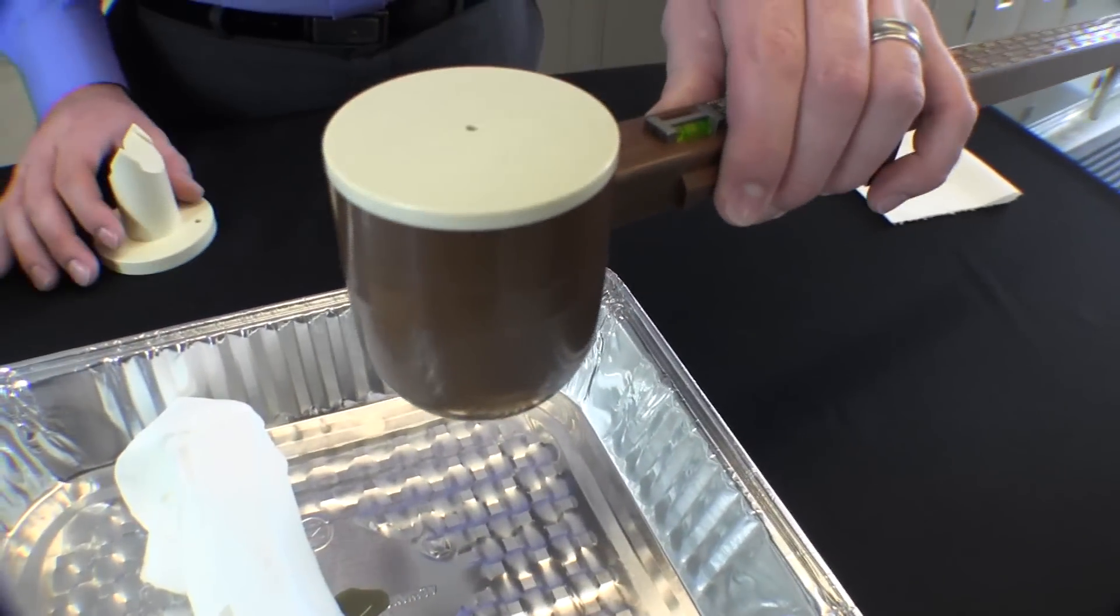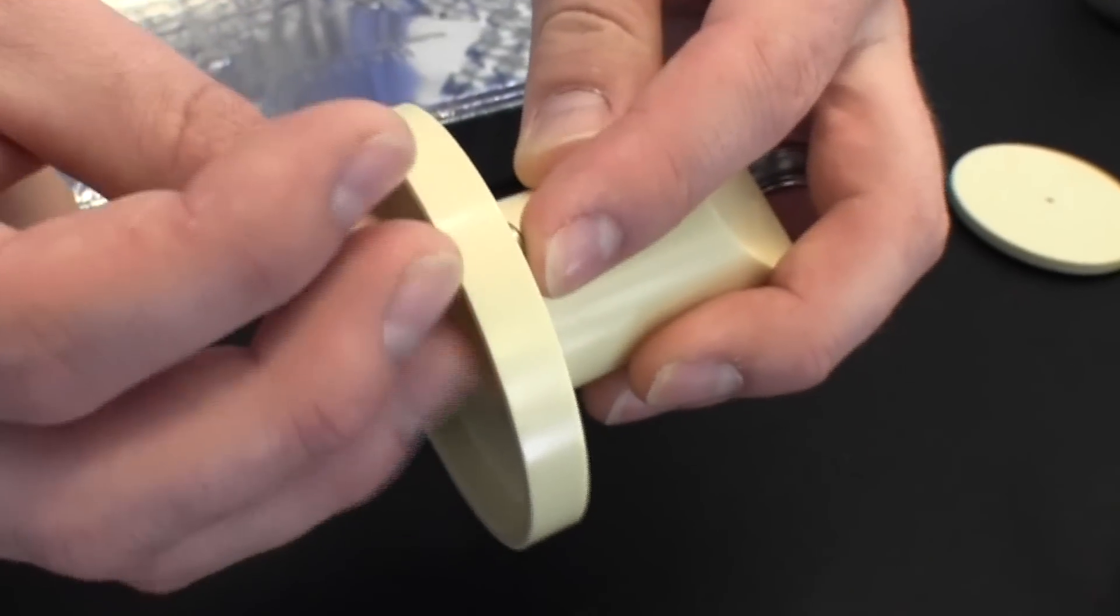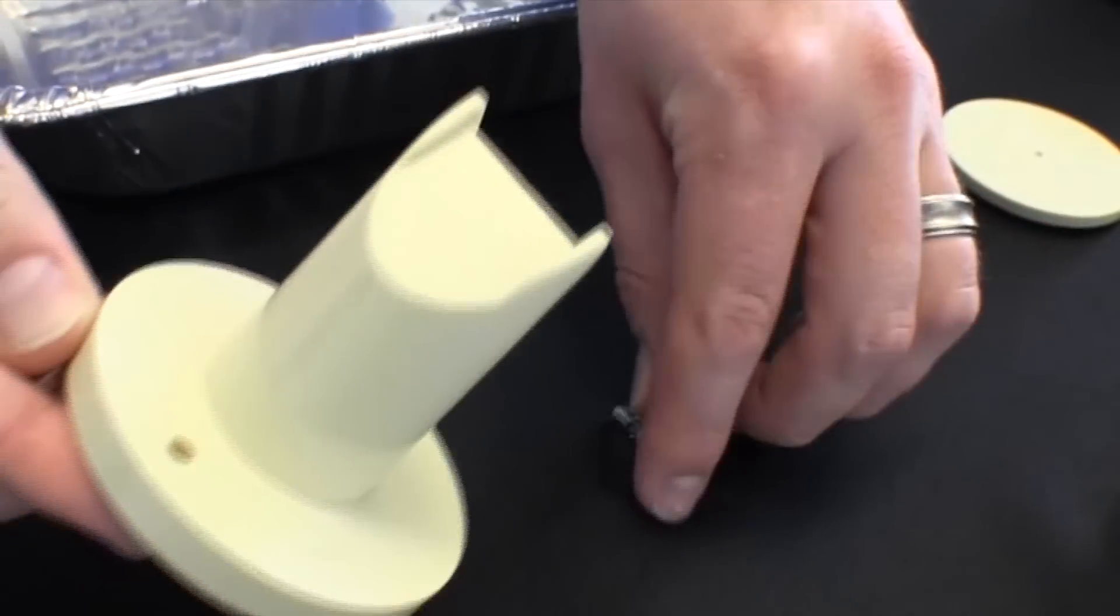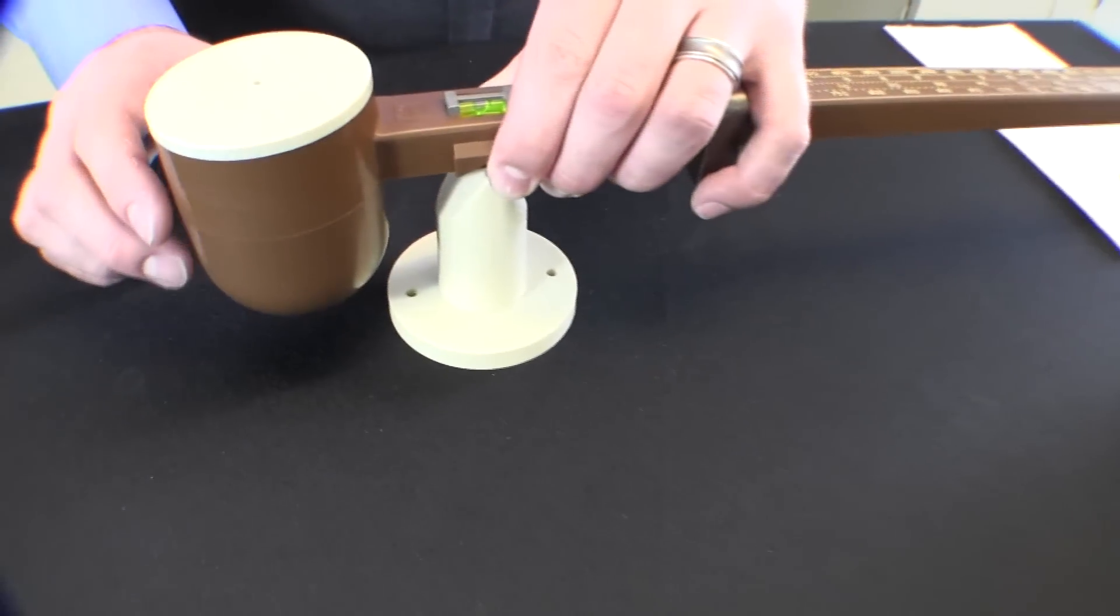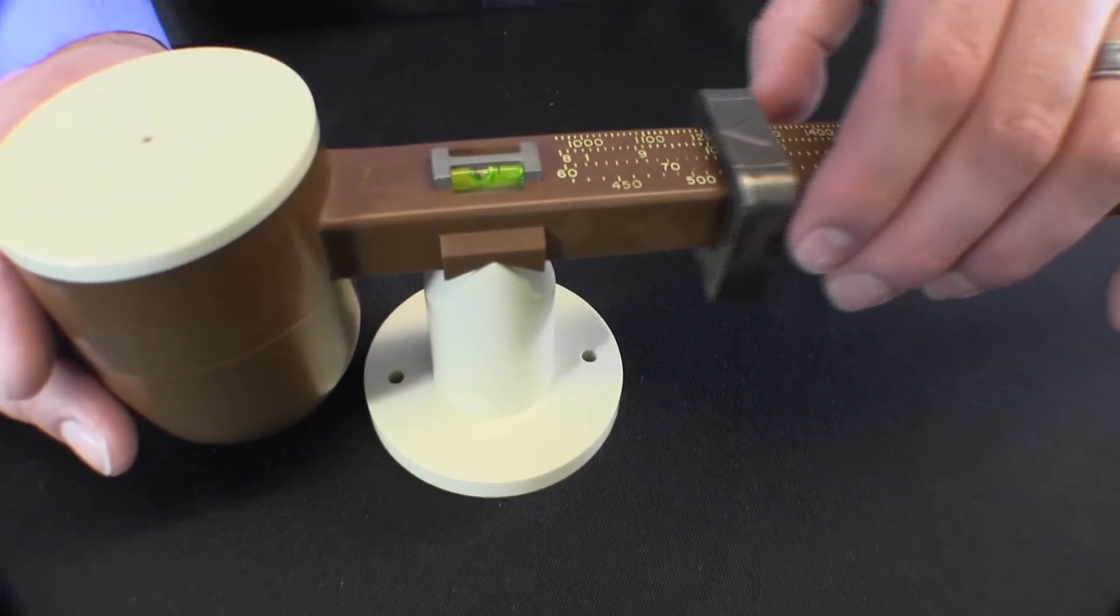Remove the screws from the bottom of the fulcrum. This will allow it to sit flat on the table. Place the mud balance on the fulcrum and slide the counterweight to the appropriate position.